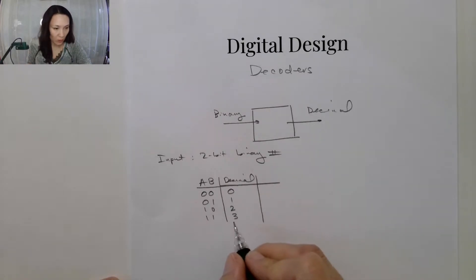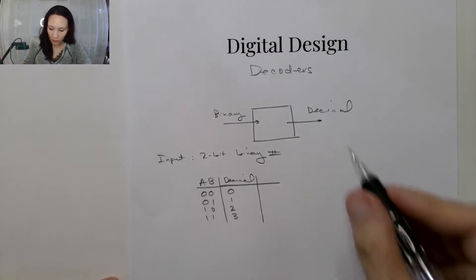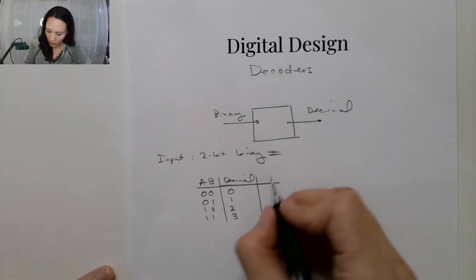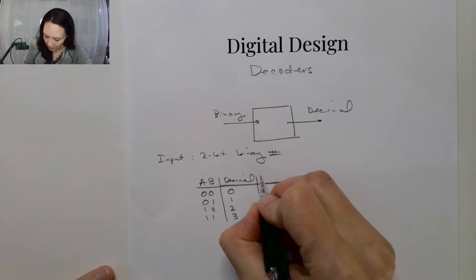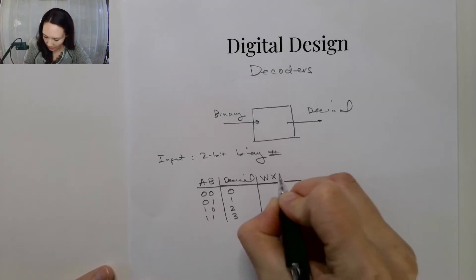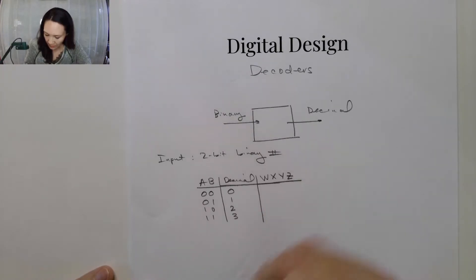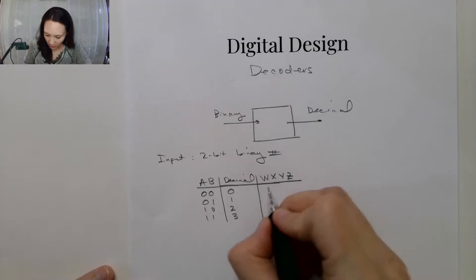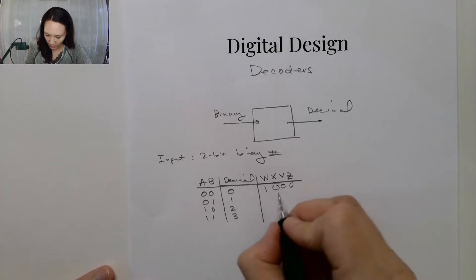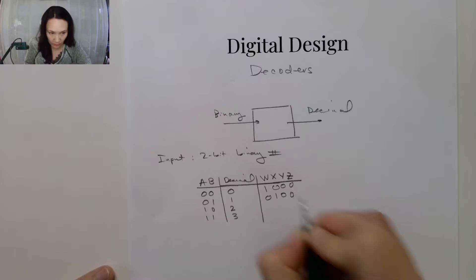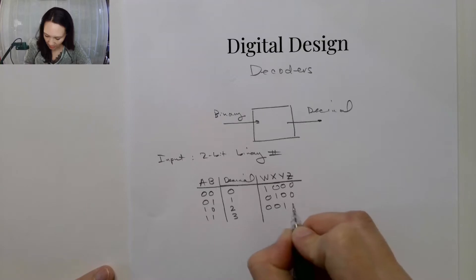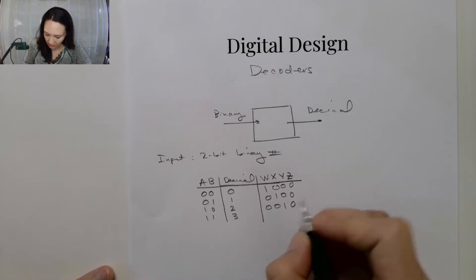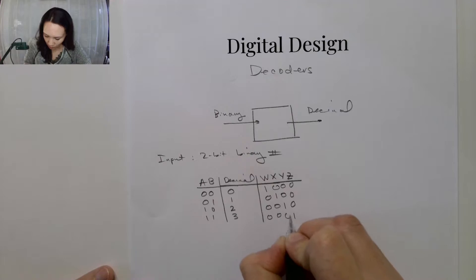But as I said, we don't have a good way to output these numerals on the other side of this decoder. So since we have 4 different states, we're going to have 4 different output bits — we'll call them W, X, Y, Z. If the output is 0, W is 1 and the rest are 0. If the output is 1, X is 1 and the rest are 0. If the output is 2, Y is 1 and the rest are 0. And if the output is 3, Z is 1 and the rest are 0.